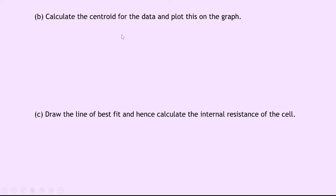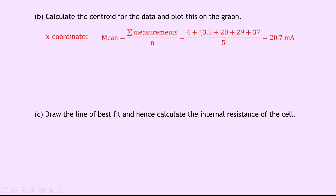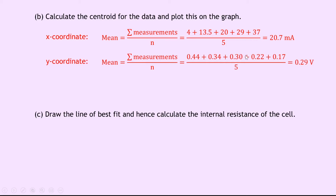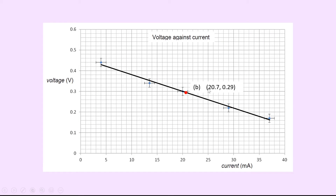Moving on to part B, it says calculate the centroid for the data and plot this on the graph. To calculate the centroid, we find the average or mean of all the x-coordinates and then the average or mean of all the y-coordinates, giving us one set of coordinates on our graph — represented by the red dot. Our mean x-coordinate is the sum of all x-values divided by 5, which gives us 20.7 milliamps. For our y-coordinates, the mean is the sum divided by 5, giving us 0.29 volts. So the centroid has an x-value of 20.7 and a y-value of 0.29, shown as the red dot on the graph.